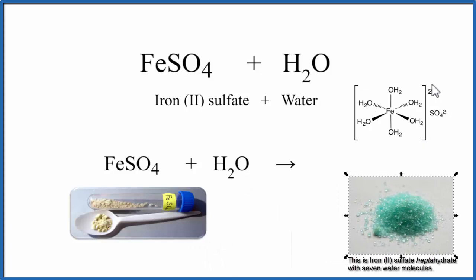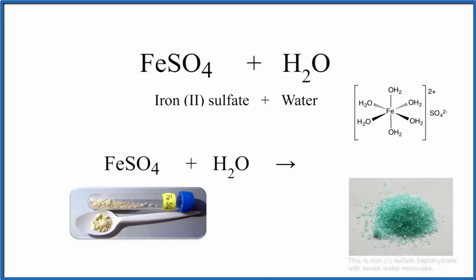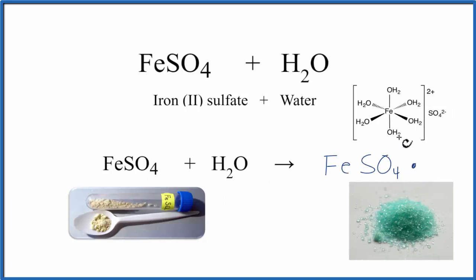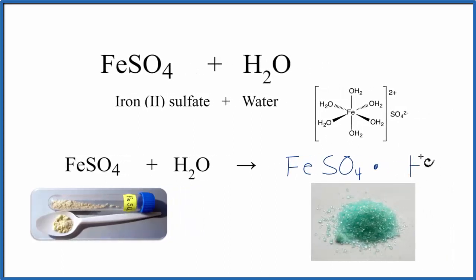This is what we're talking about up here, the iron surrounded by the water. So to write the equation, we have FeSO4 plus H2O. That'll yield FeSO4. We put a dot here to show the water molecules are around it, H2O. And if we were writing it for this one, it would be six,